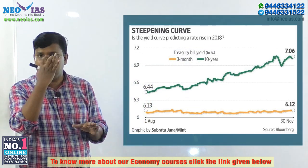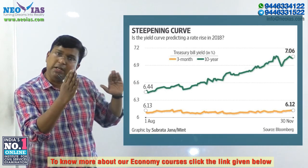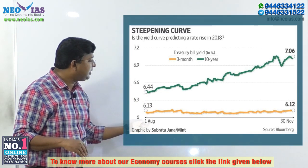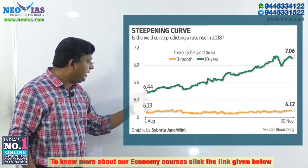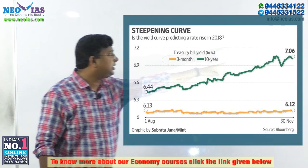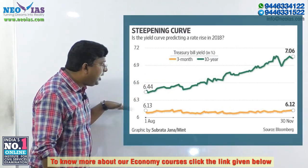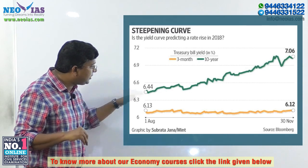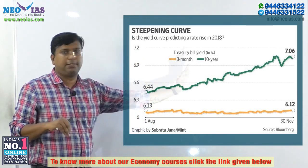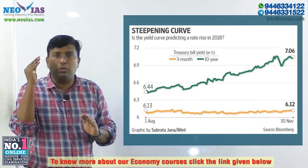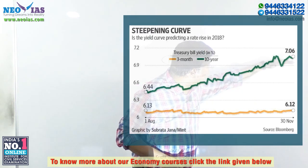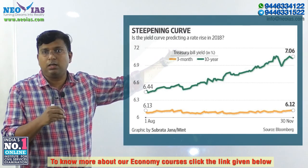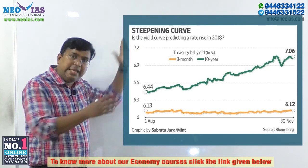This is a November 2018 yield curve showing Indian government securities and Treasury bills. On 1st August 2018, the yield was 6.44%, and on 30th November it was 7.06%. The short-term Treasury bill yield was almost constant, but government securities saw a steep increase. By 30th November there was a huge difference between the short-term Treasury bill and 10-year government securities — that is what a yield curve is all about.